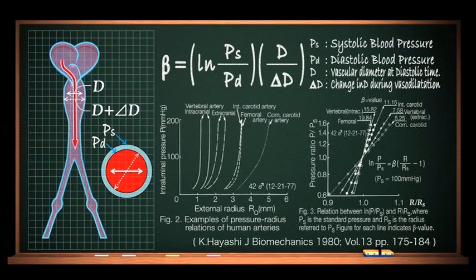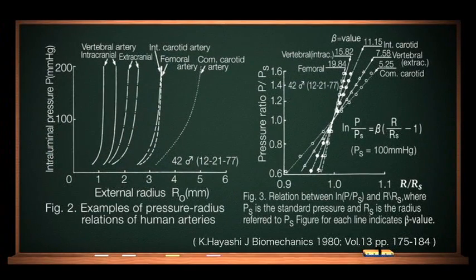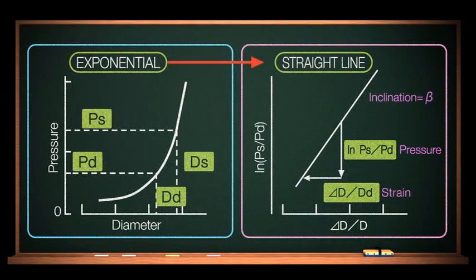Stiffness parameter beta is the relationship between the pressure and the change in diameter of the blood vessels. The relationship between pressure and diameter is exponential. So, in order to evaluate a more stable constant, the exponential function was changed into a linear function. The inclination beta of this function represents the stiffness of the artery, and it is less dependent from blood pressure.